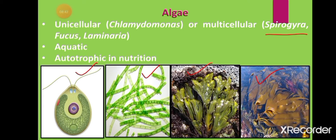Algae are autotrophic in nutrition. They are of various colors — green algae contain chlorophyll pigment, while algae of other colors have different photosynthetic pigments — and they are able to make their own food. Although some forms are parasitic and can cause diseases in other plants, most algae are autotrophic in nature.